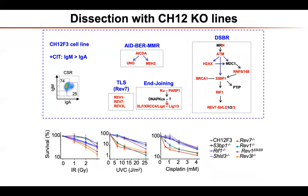To dissect this, we used CH12 cell lines isolated many years ago by Tasuku Honjo, and generated a panel of knockout cell lines including AID knockout, base excision repair, mismatch repair pathways, all double-strand break response factor knockouts, and all end-joining factor knockouts — around 20 or 30 cell lines. Using these cell lines we can check class switch recombination, resection, and translesion synthesis.